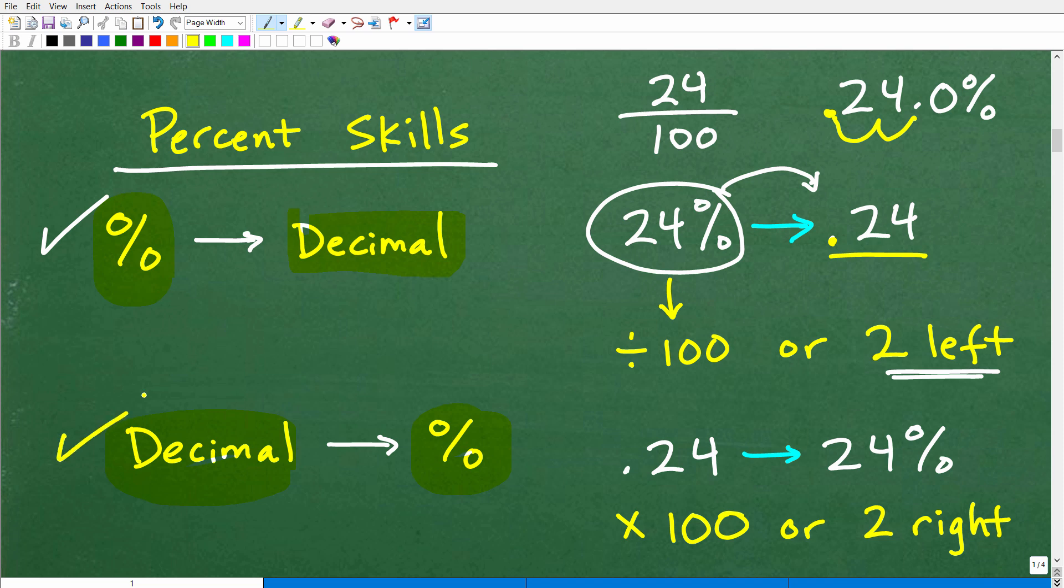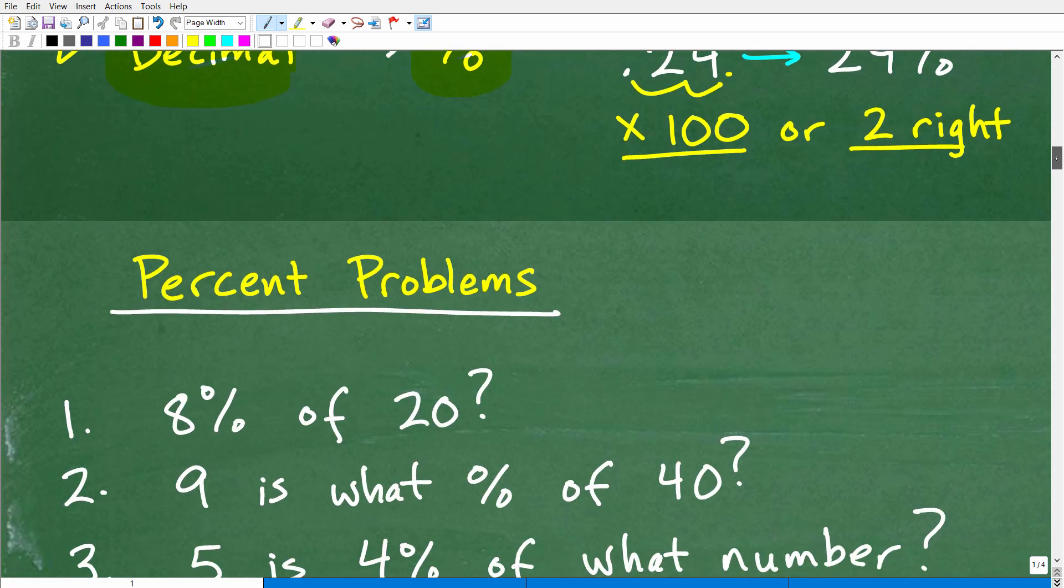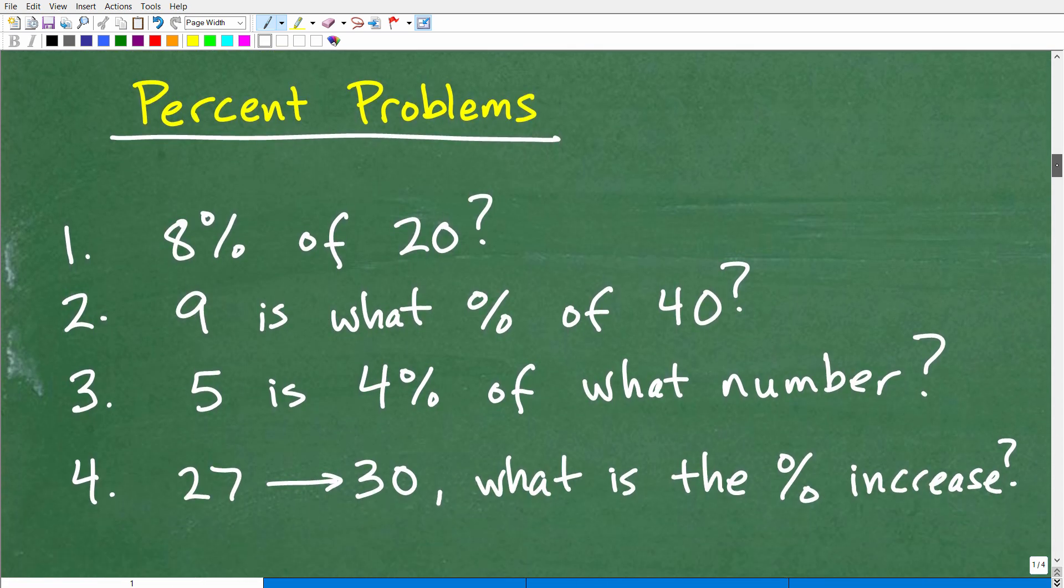Now let's talk about the reverse. Let's go from a decimal to a percent. So instead of dividing by 100, all you're going to do is multiply by 100. So 0.24 is 24%. So you can take that 0.24 and multiply by 100. But effectively, all you're doing is moving the decimal point over two places to the right. So if you understand these two skills, then I think you're going to be ready to handle these percent problems.